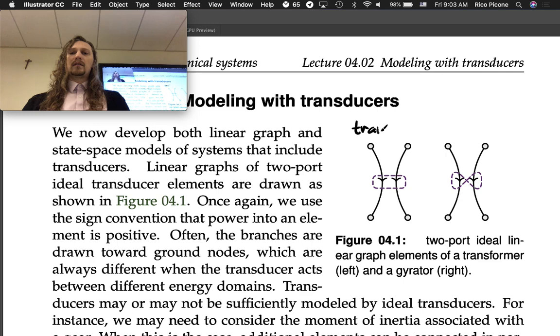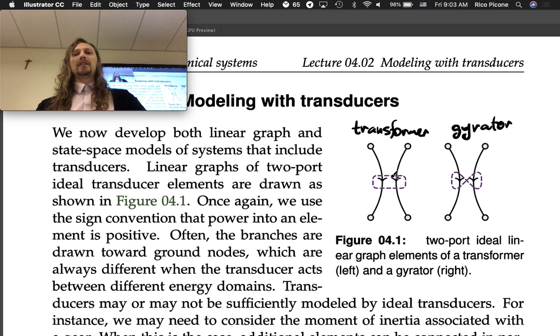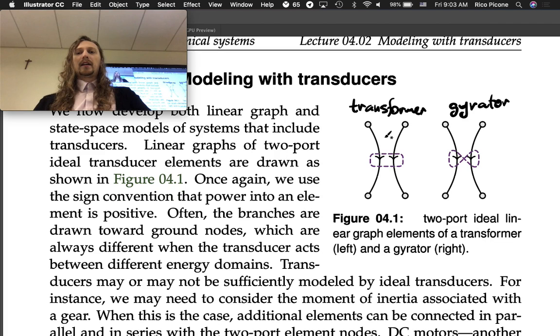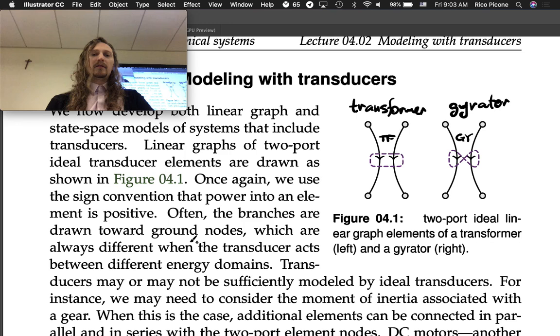Linear graphs of two-port ideal transducer elements are drawn as shown in Figure 4.1. We can draw them as two lines connecting four nodes. We have transformers on the left and gyrators on the right. The only difference being that we have this sort of oval or rectangular shape around the transformer and we have it crisscross on the gyrator just to show what it is. Sometimes we'll label that with TF or GY just to tell us a little bit more detail about the situation.